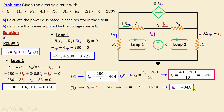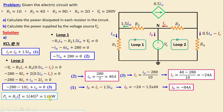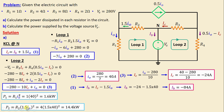The dissipated power in R1 = R1 × IO² = 1.6 kW. The dissipated power in R2 = R2 × (1.5·IO)² = 14.4 kW.